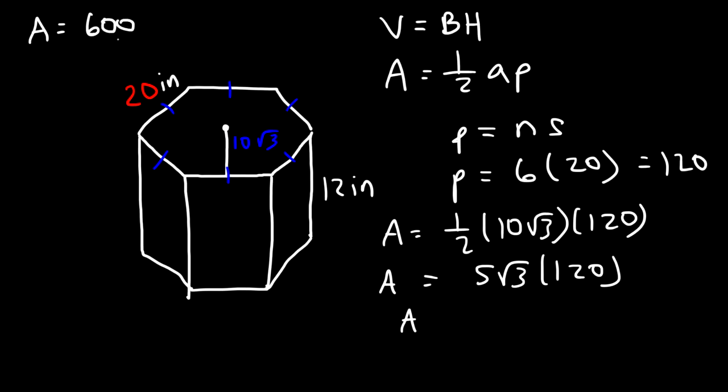If I said 620, I meant 600 — 5 times 120 is 600. So the area of the base is 600 square root 3, and that's the area of the hexagon.